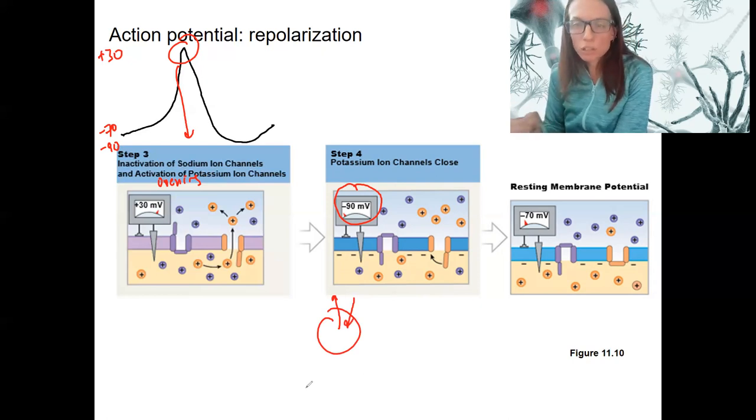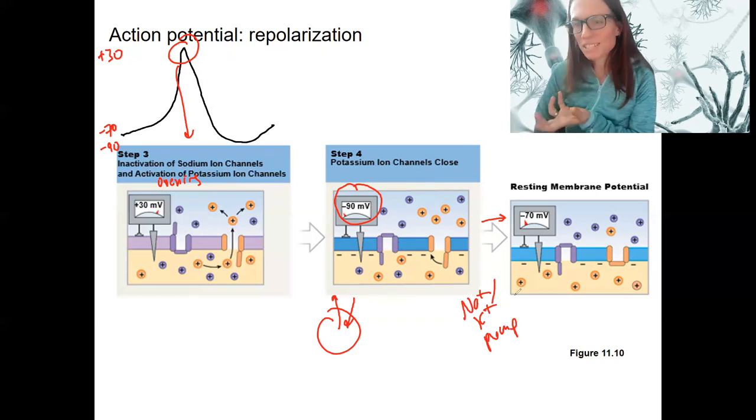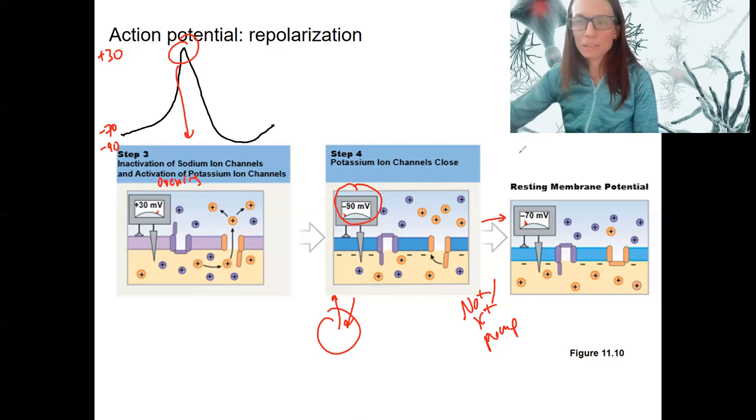Potassium channels close, and we slowly go back to rest. What causes this? How do we get from minus 90 to minus 70? What do you think? Our sodium potassium pump is going to reestablish resting membrane potential from that slightly more negative. So that's the action potential.